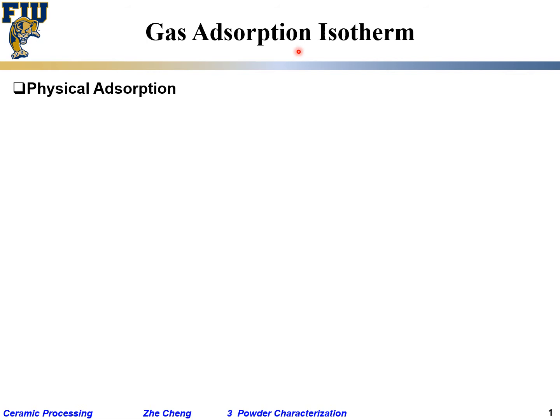The first type is so-called physical adsorption, where the interaction between the gas molecule and the solid is relatively weak — van der Waals interaction. The gas adsorbs onto the surface, but with a little bit of heating the gas molecule may dissolve and leave the surface.